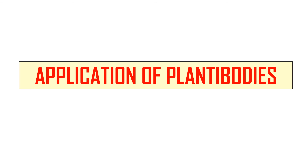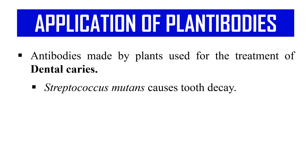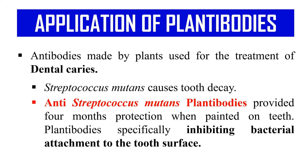Now, the applications of plantibodies. An example is an antibody made in plants that was used for the treatment of dental caries. Streptococcus mutans is a bacterium that causes tooth decay. Plantibodies were made against this Streptococcus mutans in tobacco plants, and these anti-Streptococcus mutans plantibodies provided four months of protection when painted on the teeth. Specifically, these plantibodies inhibit bacterial attachment to the tooth surface — when painted on the surface, they prevent the bacteria from attaching. This is one notable application and example of plantibodies.